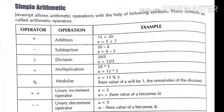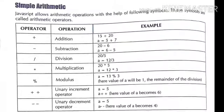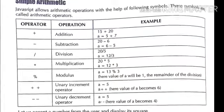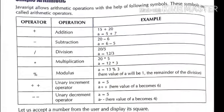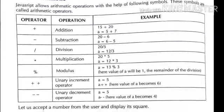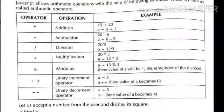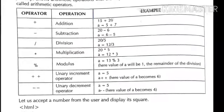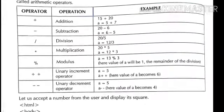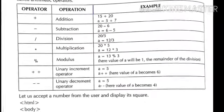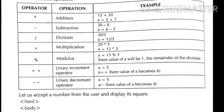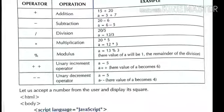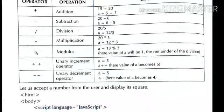Simple arithmetic operators: plus for addition, minus for subtraction, slash for division, asterisk for multiplication, and percentage sign for modulus. Modulus means the remainder of a division — for example, if a equals 13 modulus 3, the value of a will be 1, which is the remainder of the division.